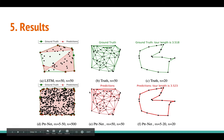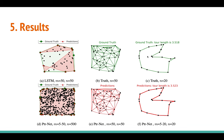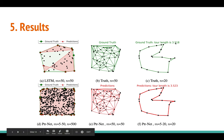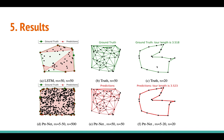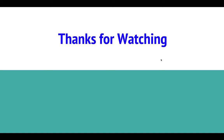For Delaunay triangulation, the pointer network output is fairly close to the ground truth. For the TSP visualization, the optimal tour (black city dots connected by green edges) produced by the pointer network is almost comparable to the ground truth optimal path. This is a very promising result. That's it for this video — thank you for watching, and please subscribe for more content.